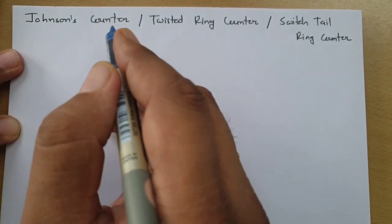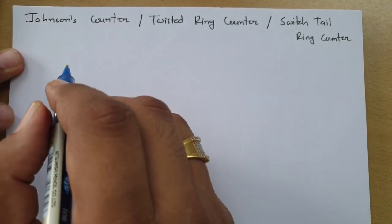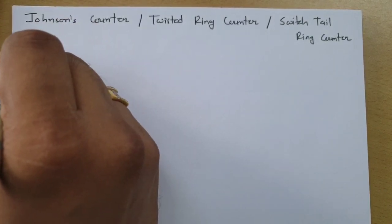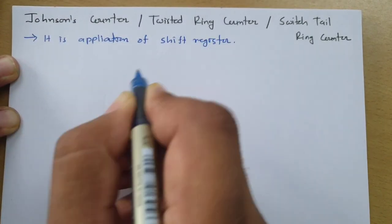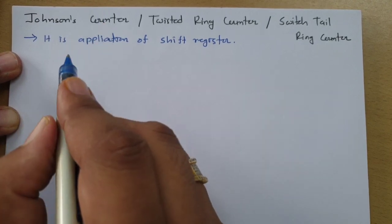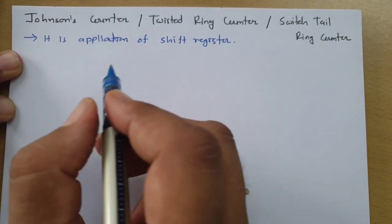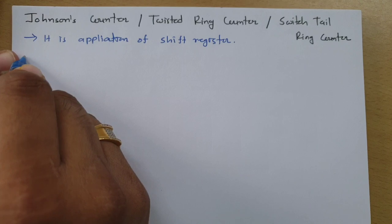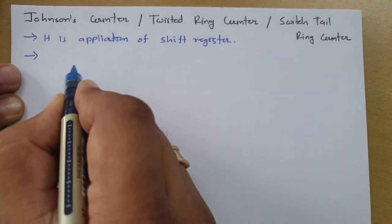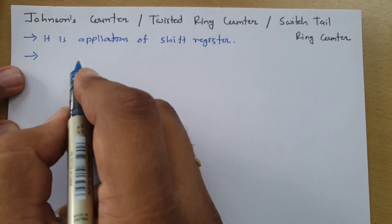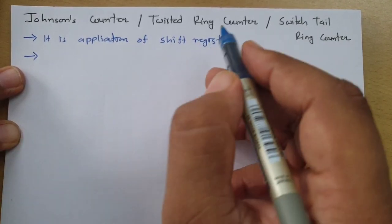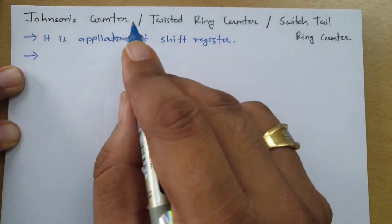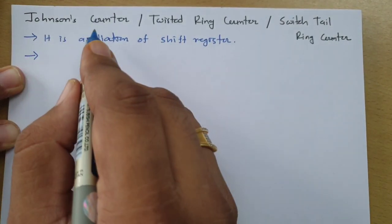Johnson's counter is an application of the shift register. How to make a Johnson counter from a shift register will be explained here. If you observe the number of states with Johnson counter, it is double that of the ring counter seen in the previous video — this is one key advantage of Johnson counter.